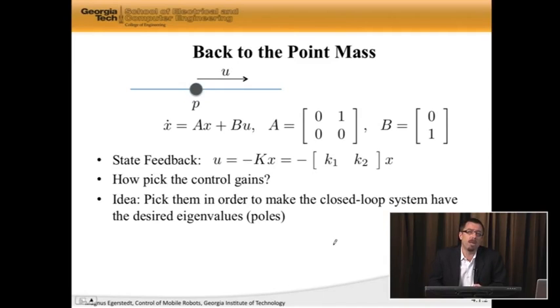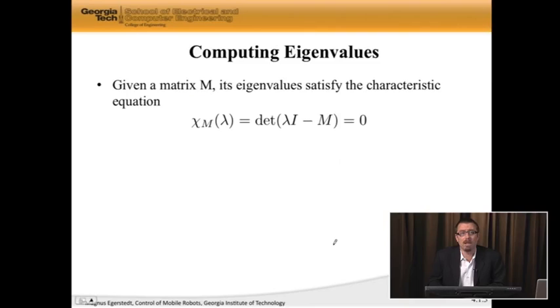Before we do that, we need to figure out how do we compute eigenvalues. In general, if I have a matrix M, this doesn't have to be 2 by 2, this is just some general M. Then every square matrix M has a so-called characteristic equation associated with it, given by this chi M of lambda. It's the determinant of lambda times the identity matrix minus M. And then we set this determinant equal to 0, and the lambdas that solve this are the eigenvalues.